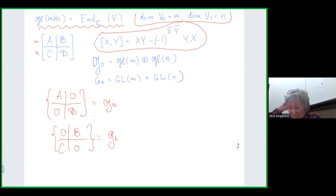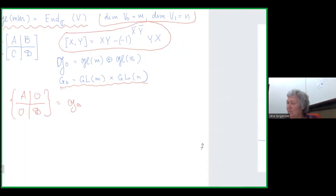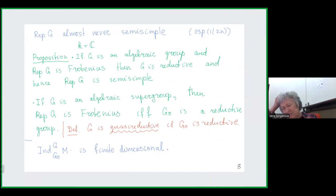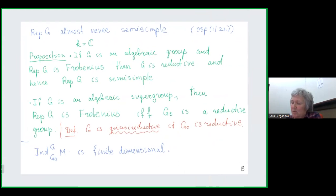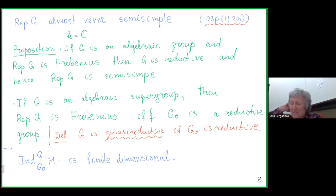It is very important that we can consider only the even part, which is a sum of two general linear Lie algebras, and the corresponding algebraic group is just a product of two general linear groups. It was discovered — Victor Kac already discussed this phenomenon in his paper — that representations of simple Lie superalgebras are almost never semisimple in finite dimensions, in contrast to the Lie algebra case. There is only one series of simple superalgebras with semisimple finite-dimensional representation theory.